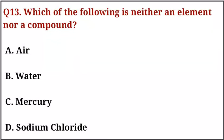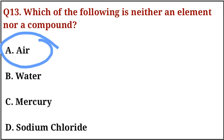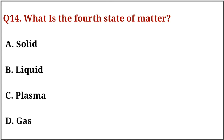Question number thirteen: which of the following is neither an element nor a compound? The correct answer is option number A, that is air. Question number fourteen: what is the fourth state of matter? The correct answer is option number C.